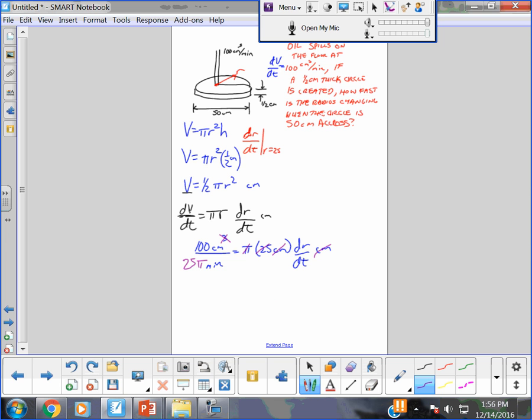All right. And again, that's just algebra. So my answer is 4 over pi centimeters per minute when the radius is equal to 25 centimeters.